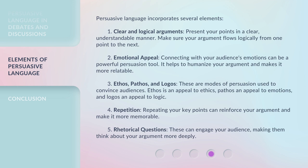Third, ethos, pathos, and logos — these are modes of persuasion used to convince audiences. Ethos is an appeal to ethics, pathos an appeal to emotions, and logos an appeal to logic. Fourth, repetition: repeating your key points can reinforce your argument and make it more memorable. Fifth, rhetorical questions: these can engage your audience, making them think about your argument more deeply.